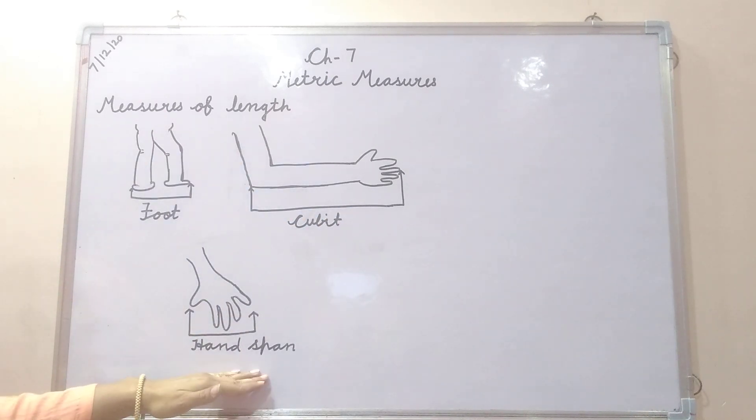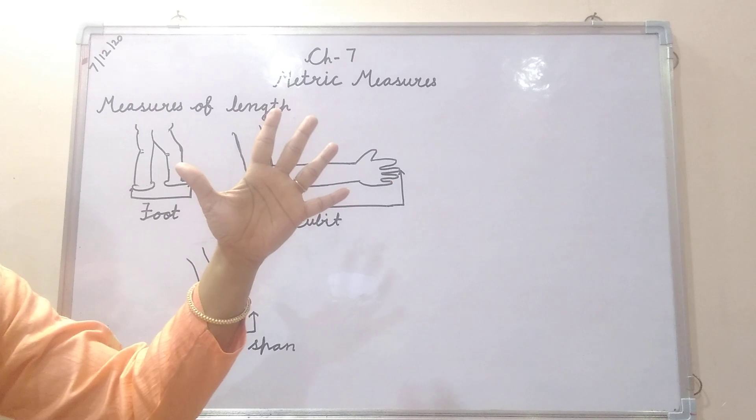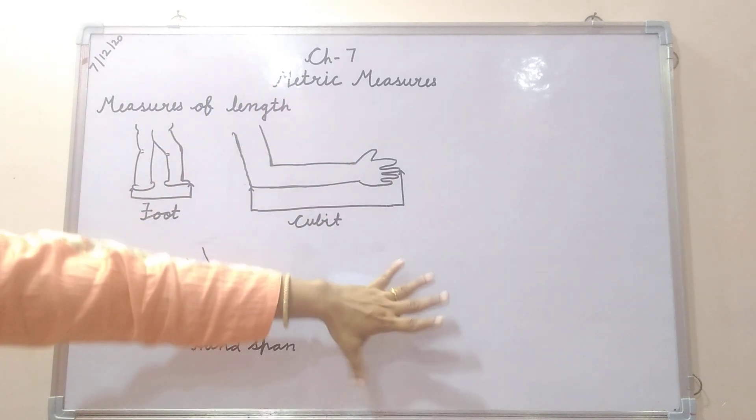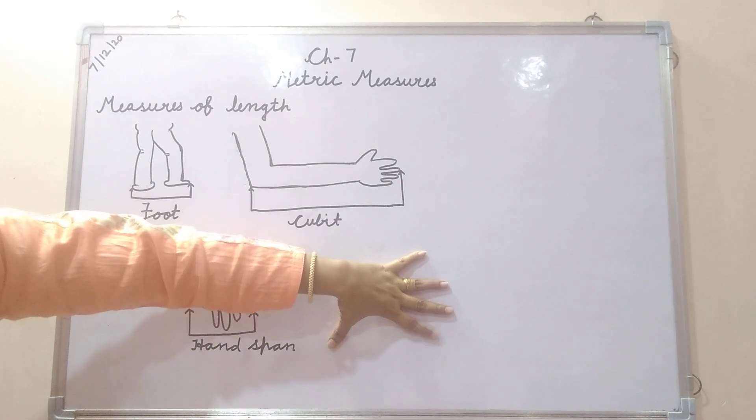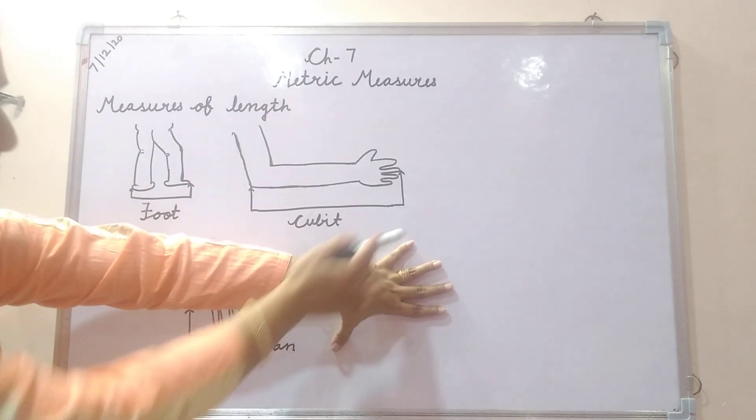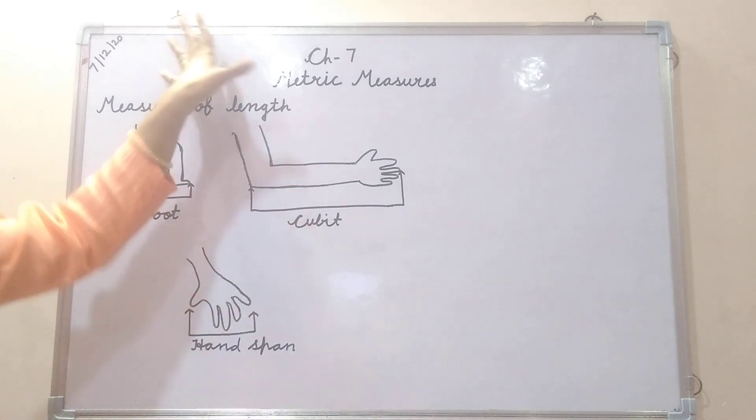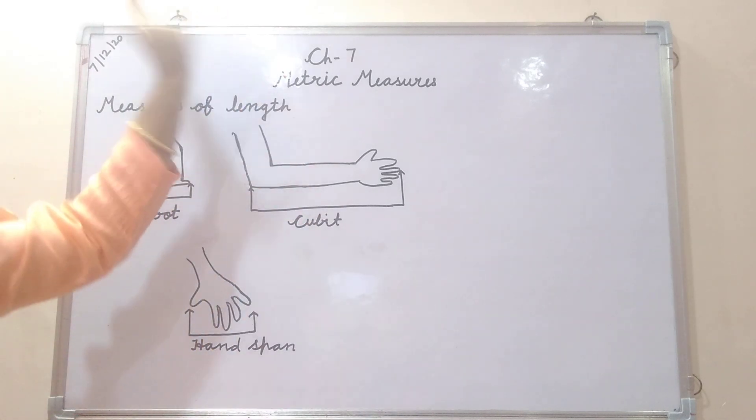Now come to the third one that is hand span. Hand span is the length between your thumb to the little finger when we measure something like that. Here from here to here. That is called hand span. Suppose if I am measuring this board with my hand span, the number of my hand span, suppose it is coming 6 hand span.